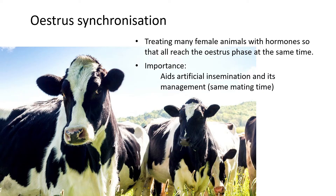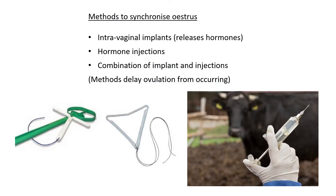Some methods can be used to actually synchronize oestrus. The first is called intravaginal implants. These release hormones into the cow to delay ovulation from happening. Here at the bottom we have two of these implants — this literally goes into the vagina of the cow and releases hormones to prevent the Graafian follicle from releasing its ovum.